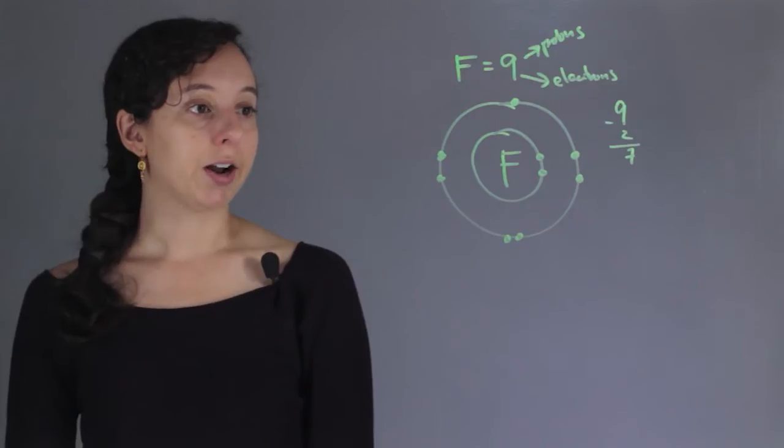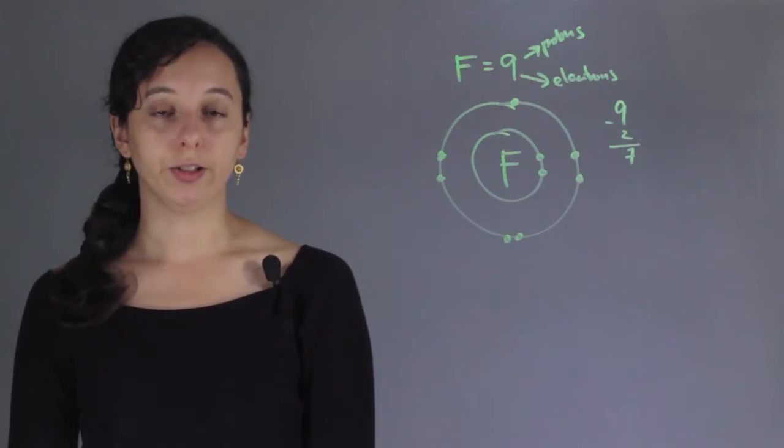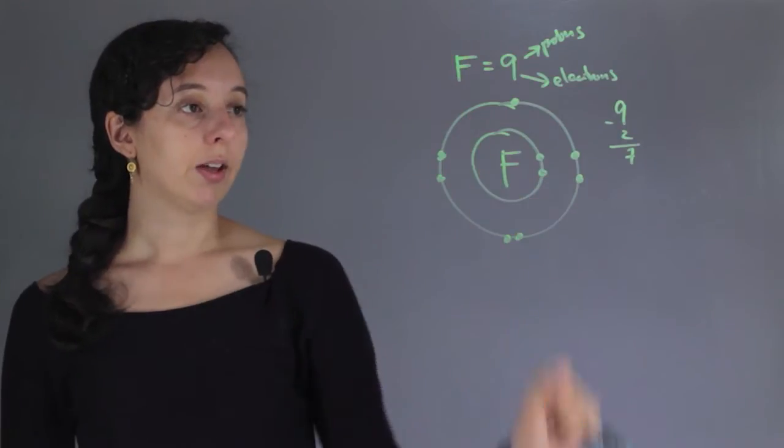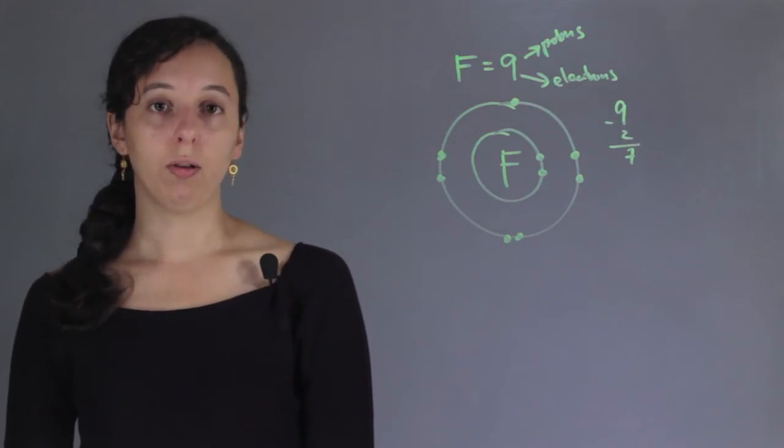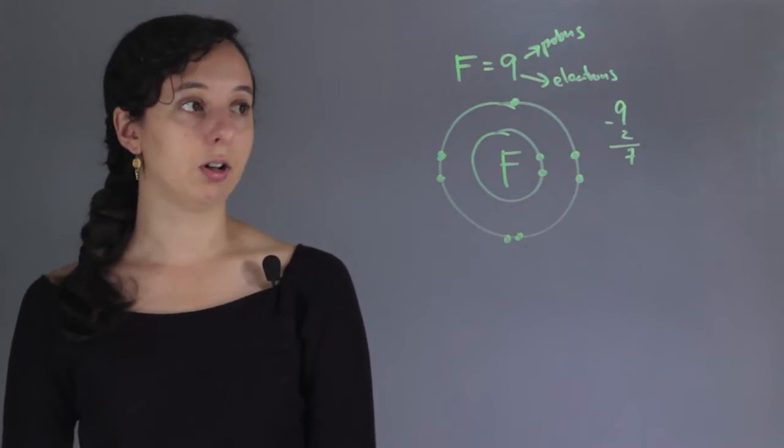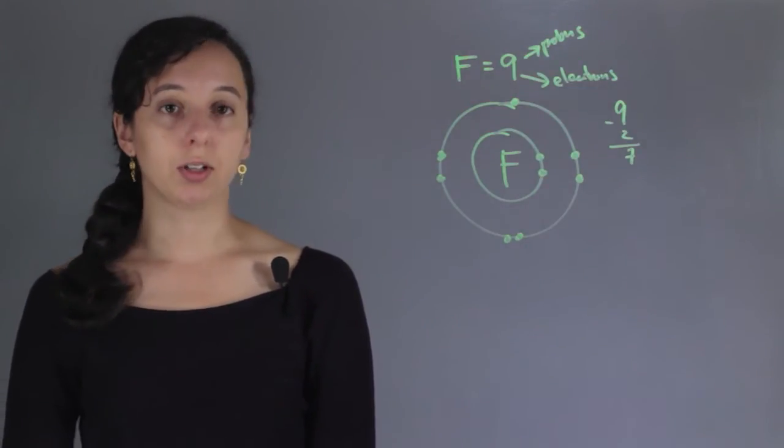Every atom wants to have a complete full valence shell, and this means getting all the way to 8. And so fluorine is only 1 away from this goal. Once an atom or element has a completely full valence shell, it becomes a lot more stable.